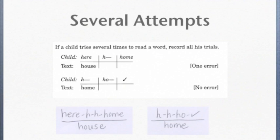On the screen you'll see both typed examples and written examples. In the first example, the child says: here, ha, ha, home, and then goes on. In that case, it is counted as one error.